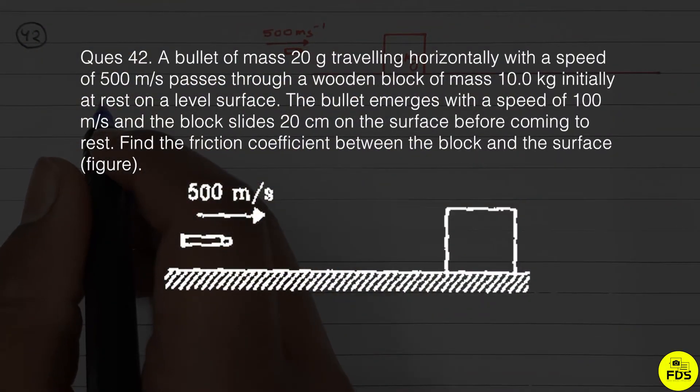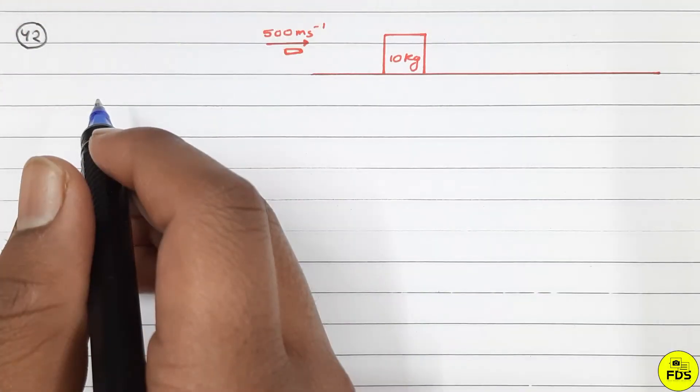A bullet of mass 20 grams traveling horizontally with a speed of 500 meters per second passes through a wooden block of mass 10 kg initially at rest on a level surface. The bullet emerges with a speed of 100 meters per second, and the block slides 20 centimeters on the surface before coming to rest. Find the friction coefficient between the block and the surface.